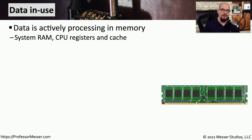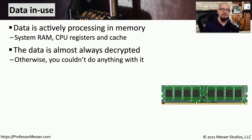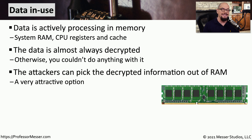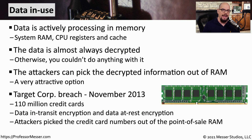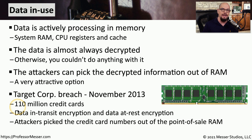If we have data in the memory of our systems, we consider that to be data in use. This would be data in our system RAM, CPU registers, or caches. This data is almost always provided in a decrypted or plaintext form because it's much easier to perform calculations and read information when it's not encrypted. Because this data in memory is not in encrypted form, it becomes a very useful place for attackers. An example was the Target network breach in November 2013, where over 100 million credit card numbers were stolen because attackers placed malware on every checkout register, capturing credit card numbers from the memory of those point-of-sale terminals.